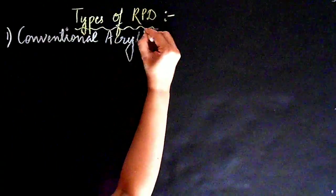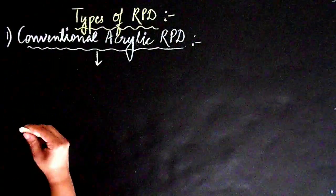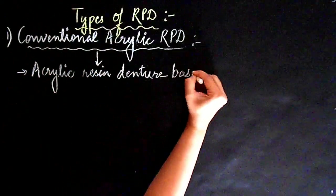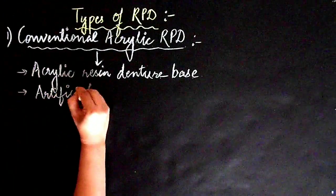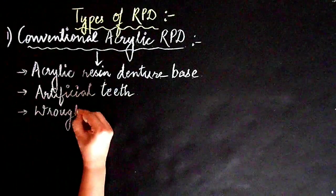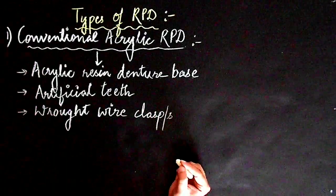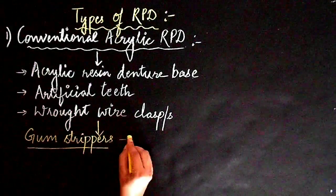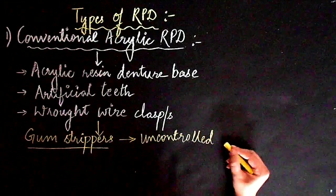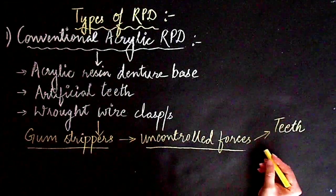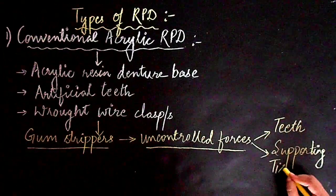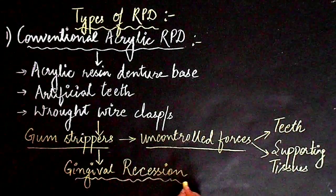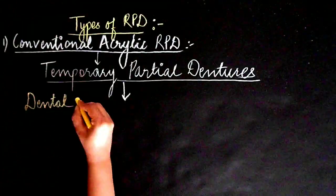If we broadly talk about the types of RPD, there are two types. First is conventional acrylic RPD, which consists of an acrylic resin denture base, artificial teeth, and wrought wire clasps. These are commonly referred to as gum strippers because they result in uncontrolled and undue forces over the teeth and supporting tissues, ultimately resulting in gingival recession with long-term use.